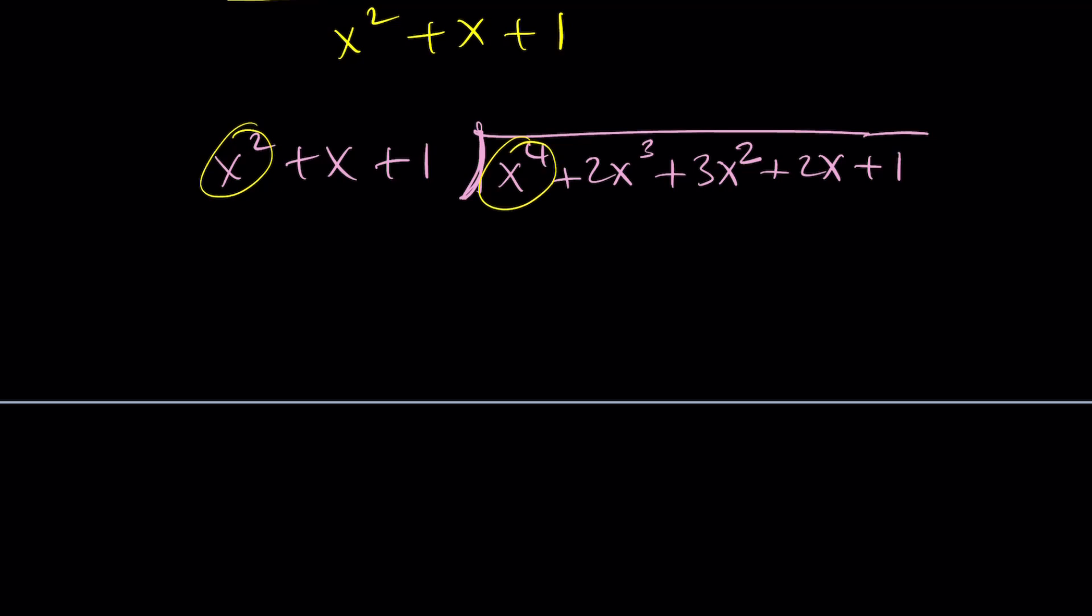How many times x squared goes into x to the fourth power? Those are the leading terms. The highest powers. It's going to be x squared times. And then the next step is going to be distribute and multiply. You're going to get x to the fourth plus x cubed plus x squared. And now you're supposed to negate and add, which means subtraction.